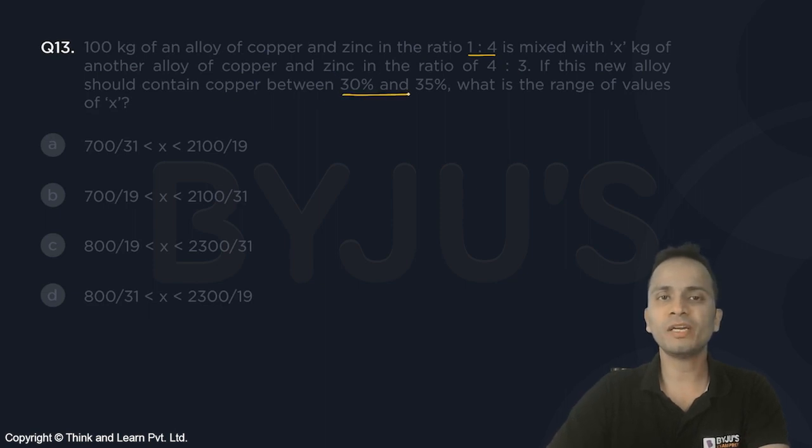should contain copper between 30% and 35%. So I will write the fraction of copper, I'll write the fraction of copper in the resulting mixture using the method of weighted average.